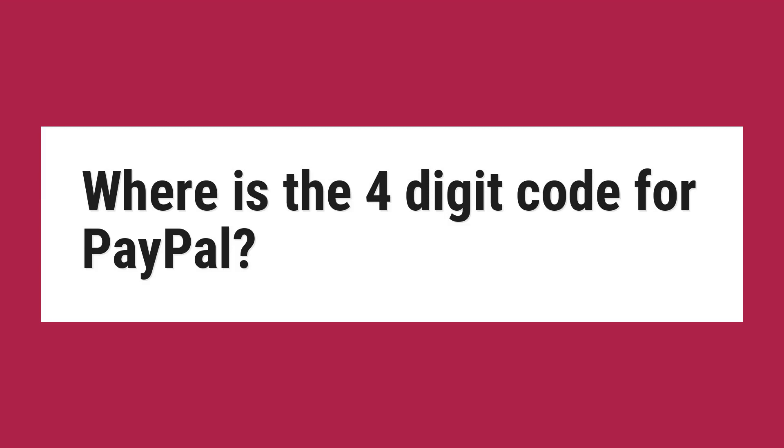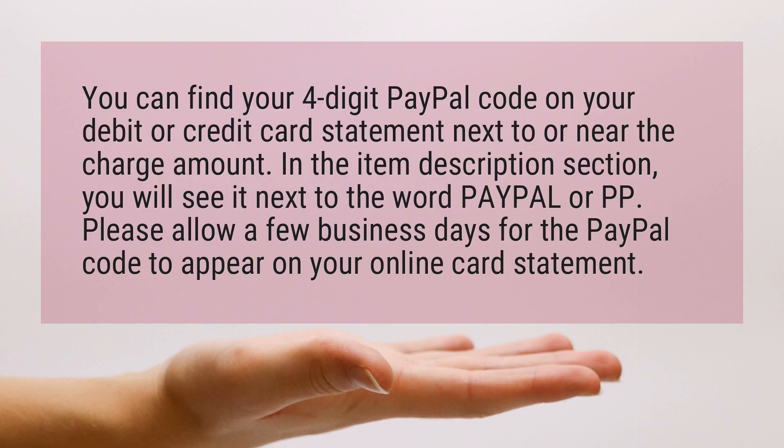Where is the four-digit code for PayPal? You can find your four-digit PayPal code on your debit or credit card statement next to or near the charge amount. In the item description section, you will see it next to the word PayPal or PP.